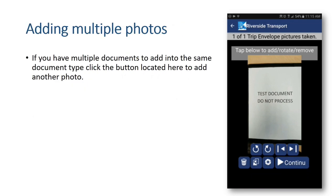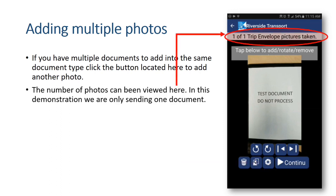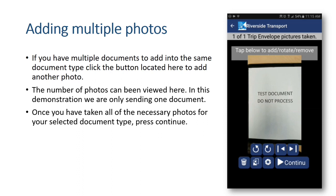If you have multiple documents to add into the same document type, click the button located here to add another photo. The number of photos can be viewed here. In this demonstration we are only going to be sending one document. Once you have taken all the necessary photos for your selected document type, press Continue.